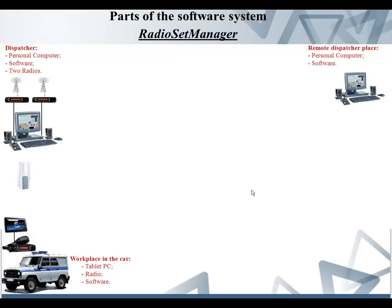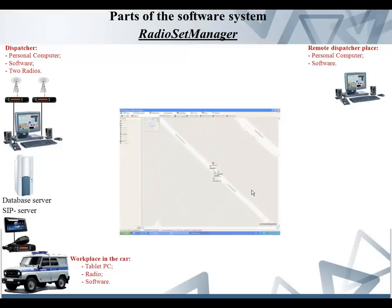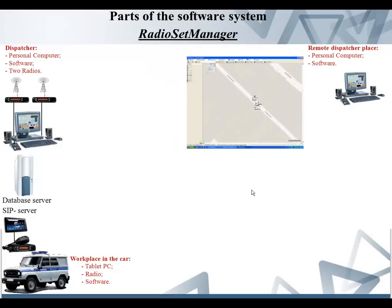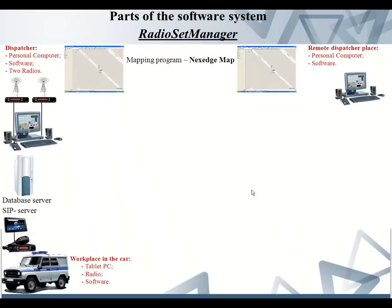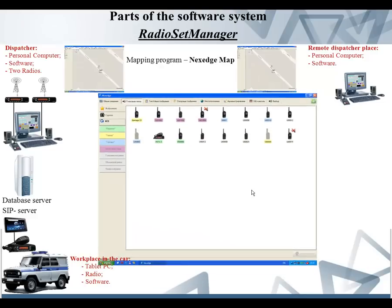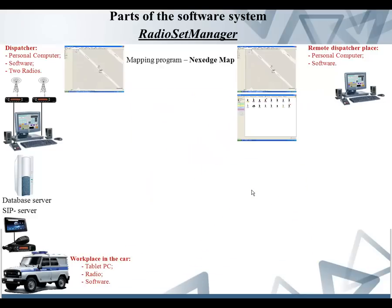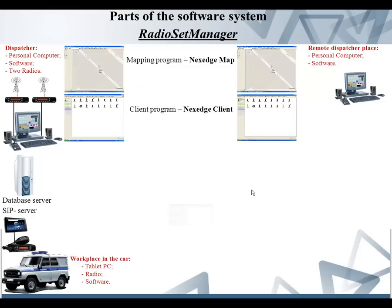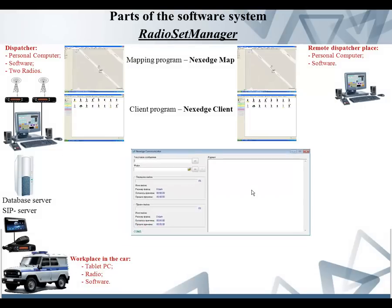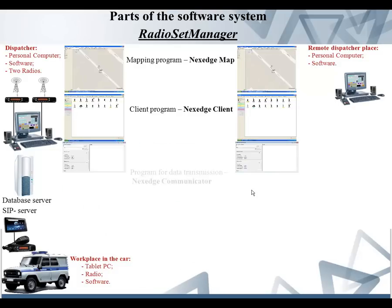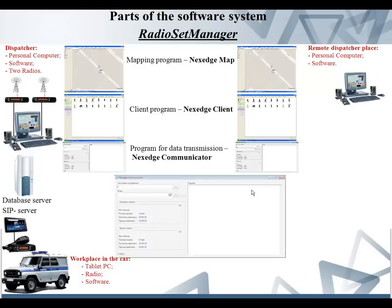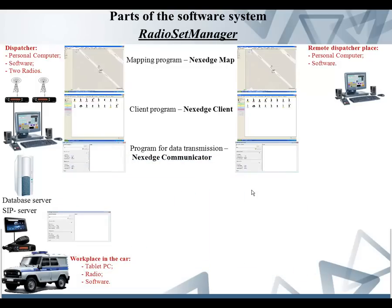RadioSatManager consists of the following program modules: a database server; NaxageMap, a program to work with cartographic information; client software NaxageClient, which implements the dispatcher workplace; and the program for data exchange between stations in the transparent mode, NaxageCommunicator. This program is installed on a tablet PC, which is used as a workplace in the car.